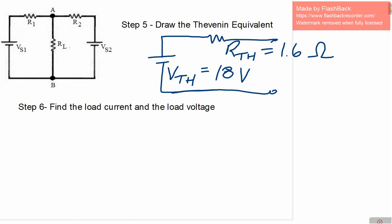Step 6, last step. We're going to insert the load resistor back into the circuit. So we can redraw our circuit with the load inserted. And it will look like this here. So Thevenin voltage is 18 volts, the Thevenin resistance is 1.6 ohms, and the load resistor, if you go back to the original part of the question, was 4 ohms.